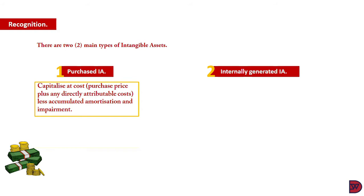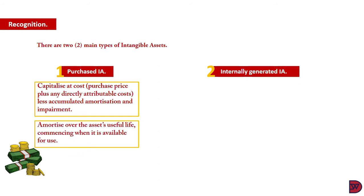When we say cost, it entails the purchase price of the intangible assets plus any directly attributable costs such as legal fees, testing costs, etc. Amortization is to commence when the intangible asset is available for use. Moving on to discuss the internally generated intangible asset.